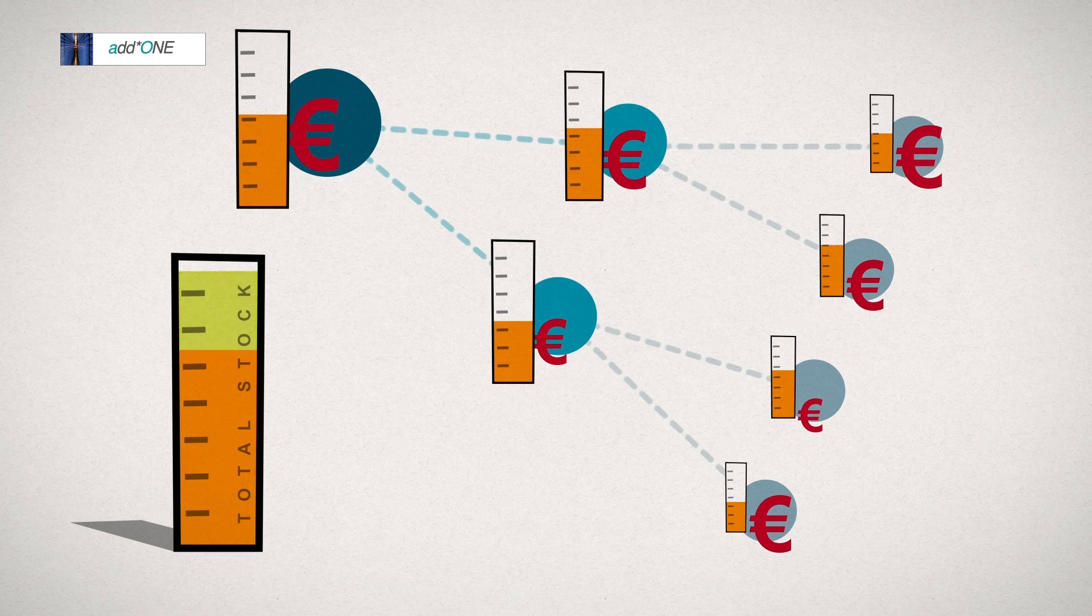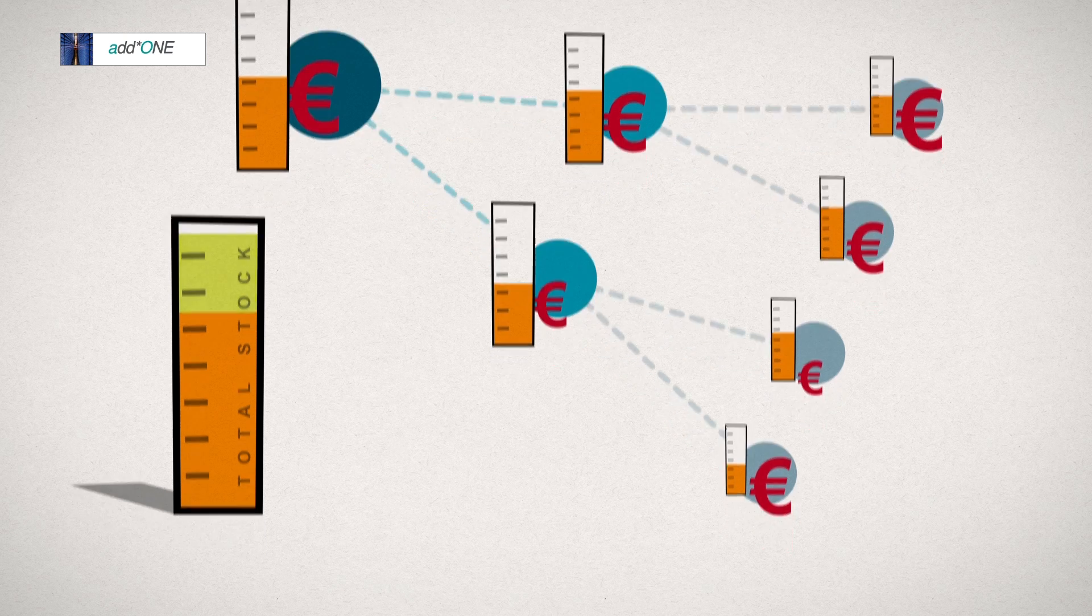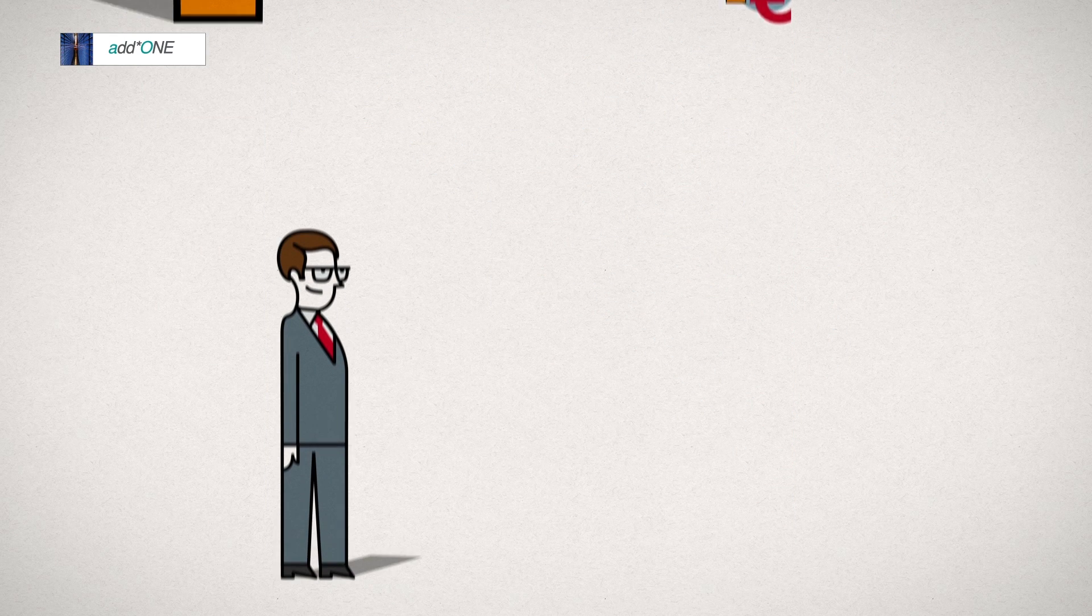The result is an optimized allocation of stocks and an overall reduction of inventory within the network that is up to 20% lower than the successive optimization results. This can all be reached while maintaining maximum availability for the customers at the end of the supply chain.